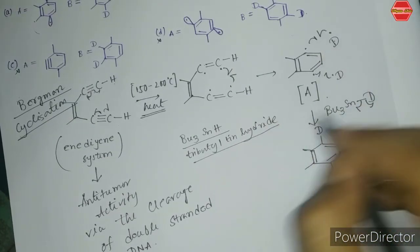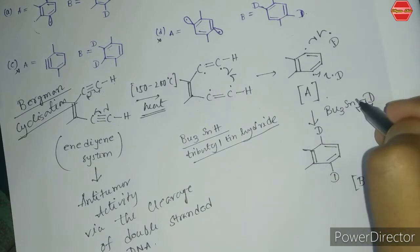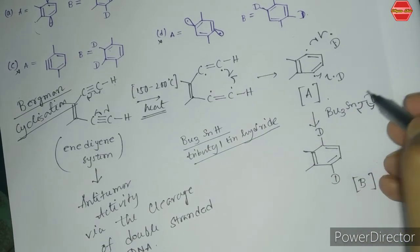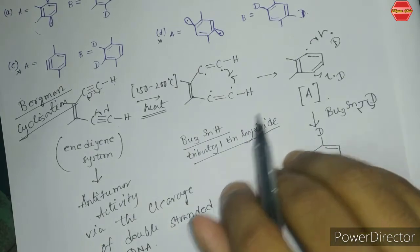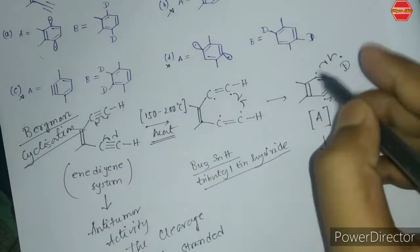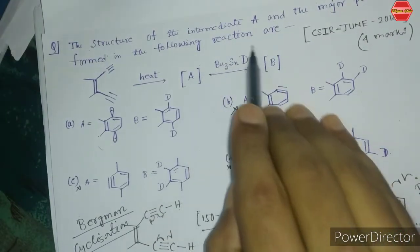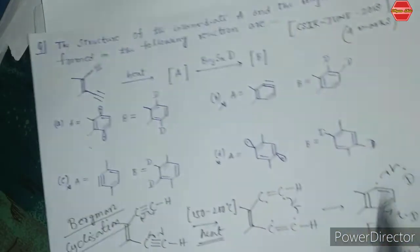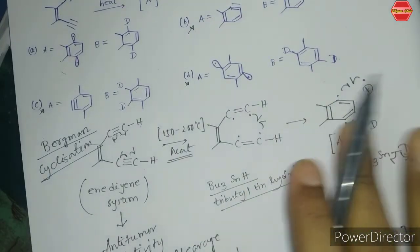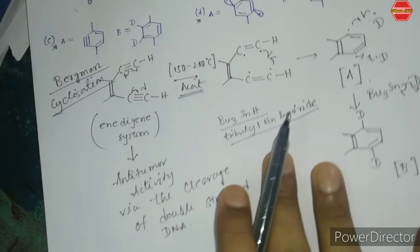A question may arise: doesn't Bu₃SnD require a radical initiator? In this question no radical initiator is given, because the two radicals formed from the enediyne intermediate itself initiate the reaction with the tributyltin deuteride side. So no external radical initiator is needed.